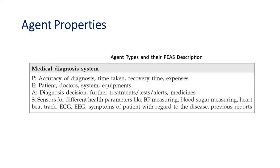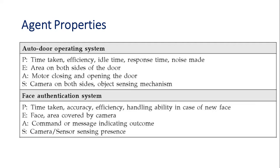Another example is a medical diagnostic system, which automatically diagnoses problems. The performance measure is based on accuracy of diagnosis — clear, accurate analysis comes first — followed by time taken, recovery time, and expense. The environment includes the patient, doctors, medicines, and equipment. The actuators are the decisions and outputs given, such as further treatment recommendations. Sensors in a healthcare system include BP monitoring, sugar monitoring, heartbeat tracking, ECG, and similar devices.